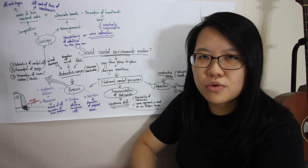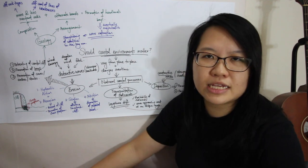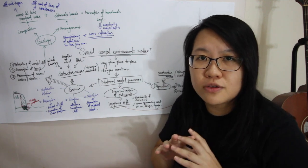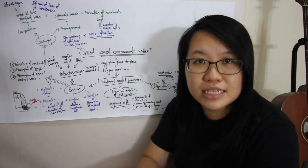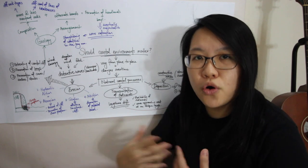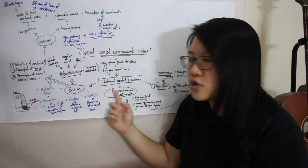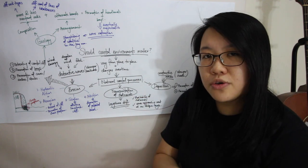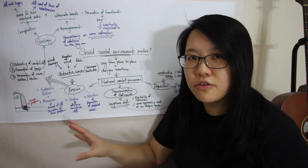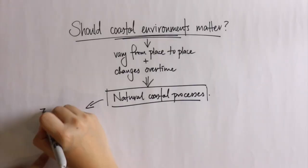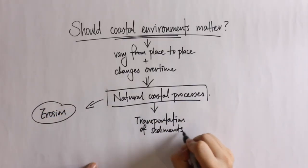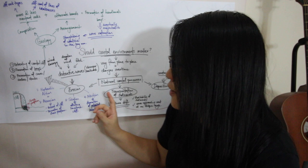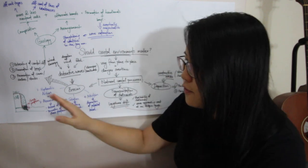Many times we just assume coast means a sandy beach, but the reality is that around the world coastal environments actually vary from place to place. At the same time, they also change over time due to all the natural coastal processes. In your textbook you will realize they categorize them under three different processes: erosion, sediment transportation, and deposition.